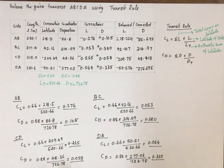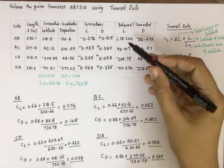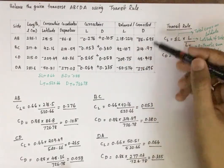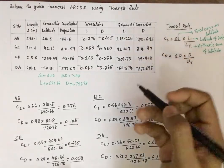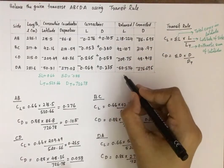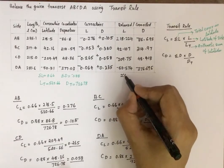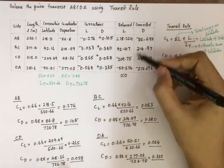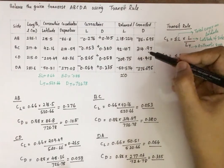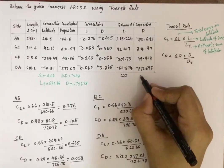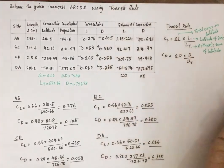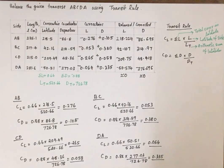To verify, we find the algebraic sum of the balanced latitudes and departures. Both sums come out to approximately 0.0002, which we can assume is zero. Therefore, the traverse A-B-C-D-A is now balanced using the Transit Rule.